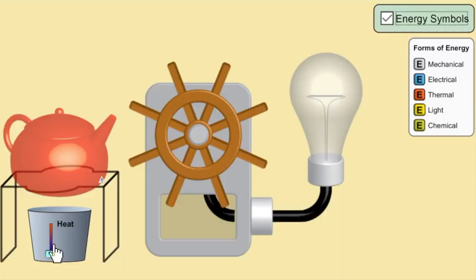Alright ladies and gentlemen, we're going to look at an animation here that's going to show some energy transformations. If you look at our key to the right, we've got forms of energy that include mechanical, electrical, thermal, light, and chemical. Now they're all represented by different color capital E's. So we're going to see how those transformations work here.